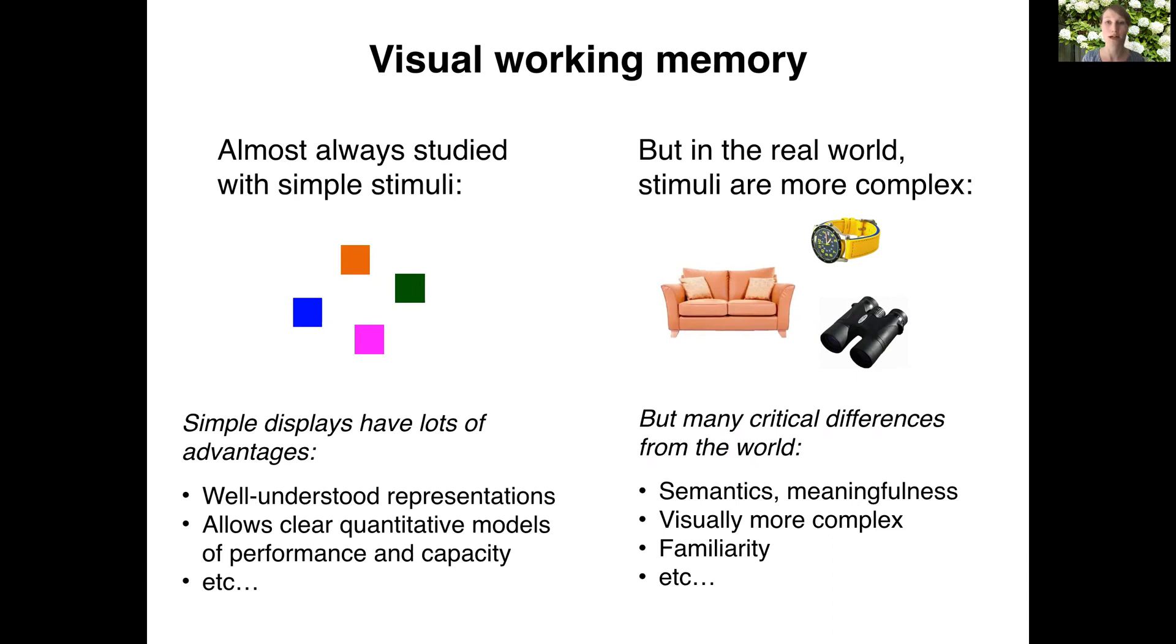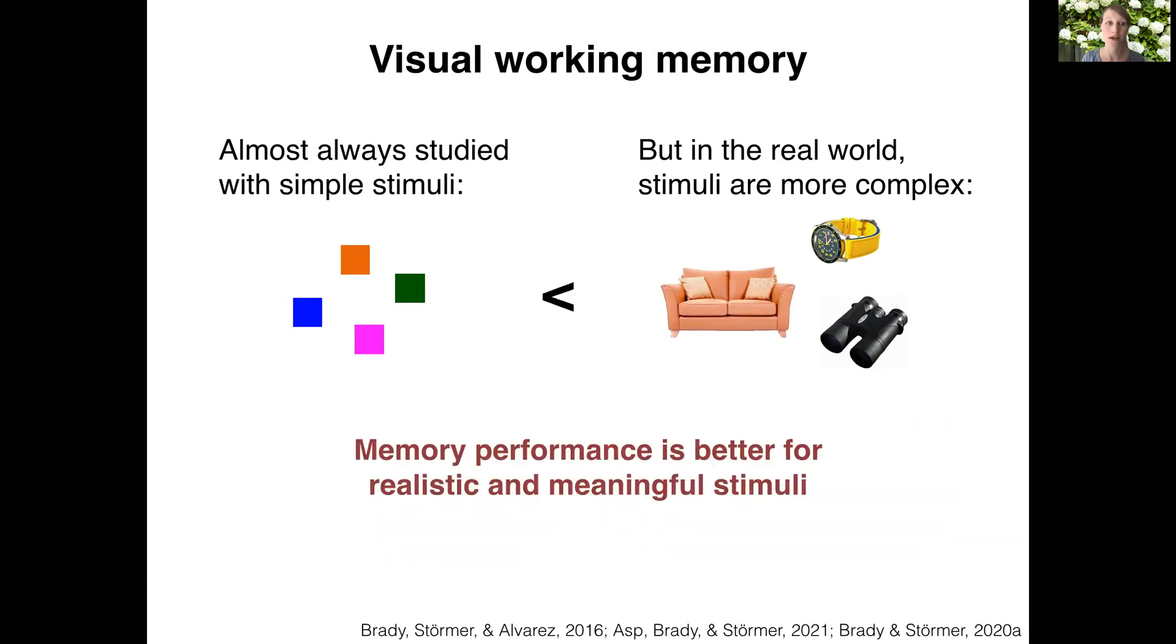But these simple stimuli differ in important ways from stimuli in the real world. For example, objects relate to prior knowledge and are visually more complex. And maybe not so surprisingly, these differences have important consequences for working memory capacity. In particular, we have previously shown that working memory capacity is higher for realistic and meaningful stimuli compared to simple stimuli.